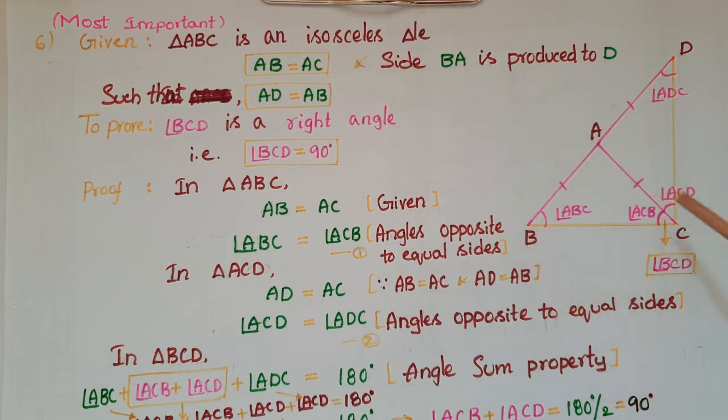In this problem, ABC is an isosceles triangle so AB is equal to AC. Side AB is produced to D such that AB is equal to AD. We have to prove that angle BCD is equal to 90 degrees or a right angle.